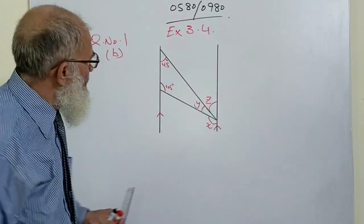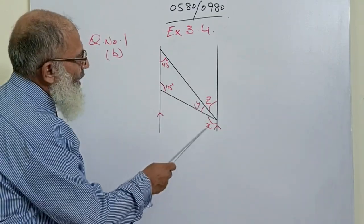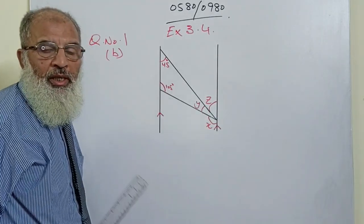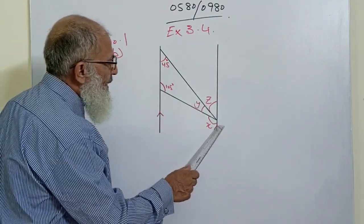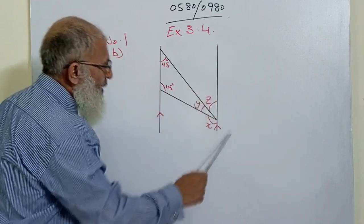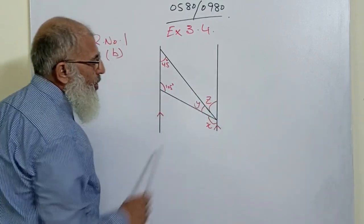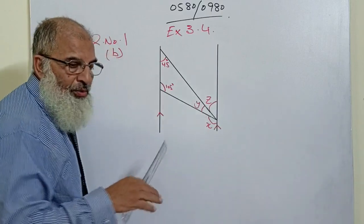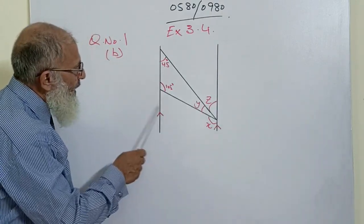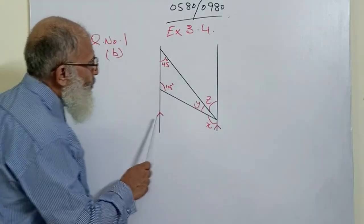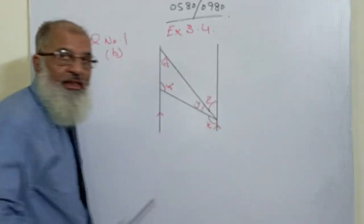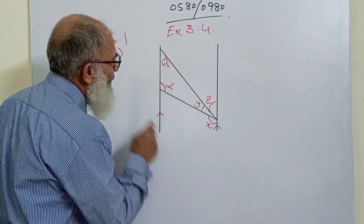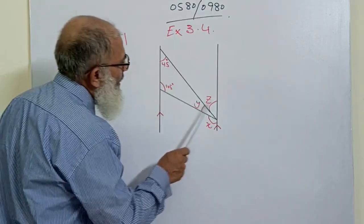This is our first question for today and we have to find the unknown angles, as usual, with the help of the known angles. First of all, find the clues. There is one clue here — this line is parallel to this line. The clue is this sign — the arrowhead on both lines means these are parallel lines. The angles given are 45°, 105°, and the unknowns are X, Y, and Z.